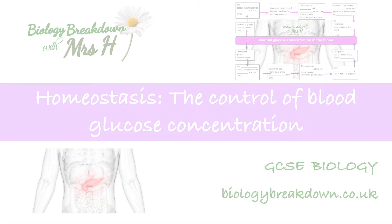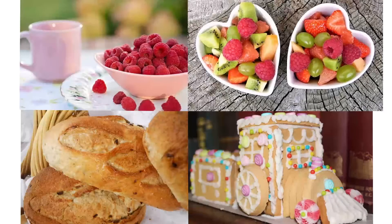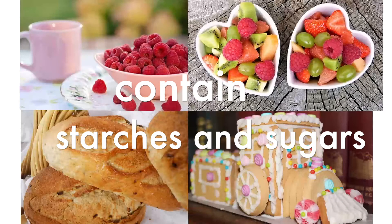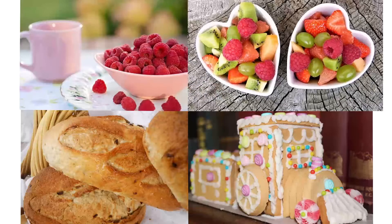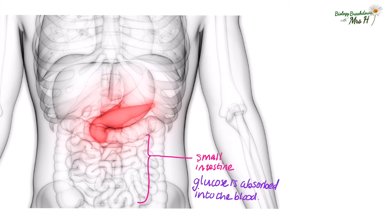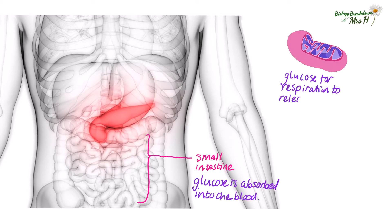Hello, Mrs. H here. These foods are rich in carbohydrates, meaning they contain starches and sugars. When we eat these foods, our enzymes speed up the breakdown and conversion of these carbohydrates into simple sugars such as glucose, which can be absorbed from the small intestine and into the blood. We need glucose for respiration to release energy to our cells.